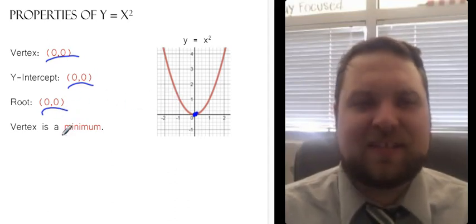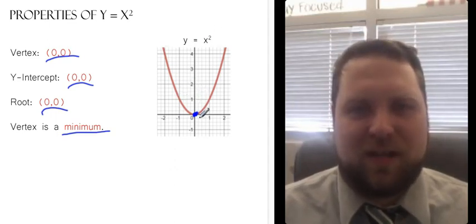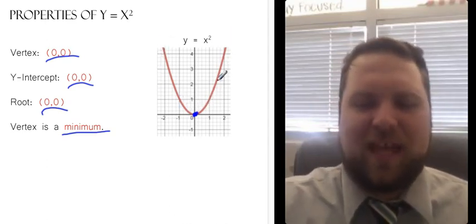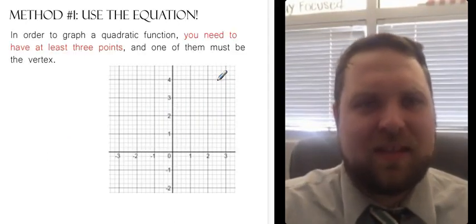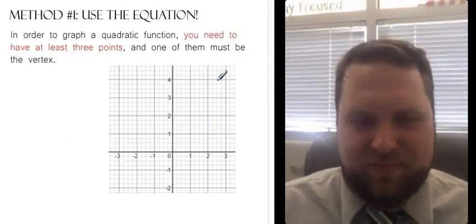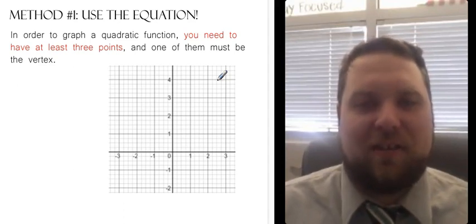And the vertex for this is a minimum. That's important to know because we want to know the graph of y equals x squared opens upward. It's u-shaped. And so now that we have that, we know where the vertex, y-intercept, and root is. Let's graph this thing.